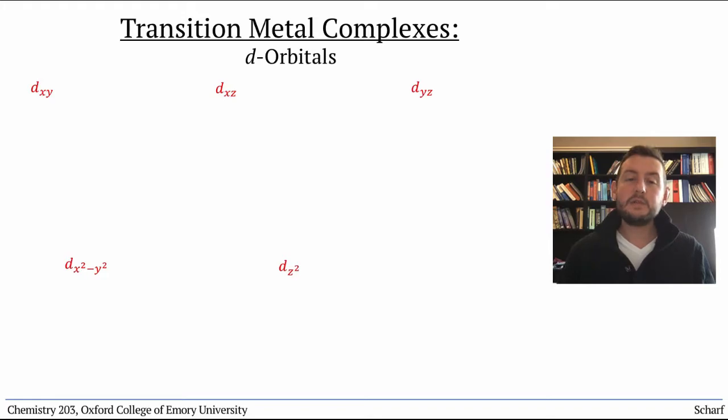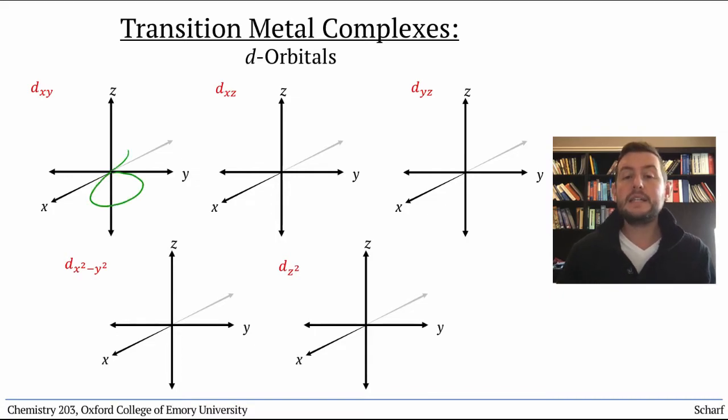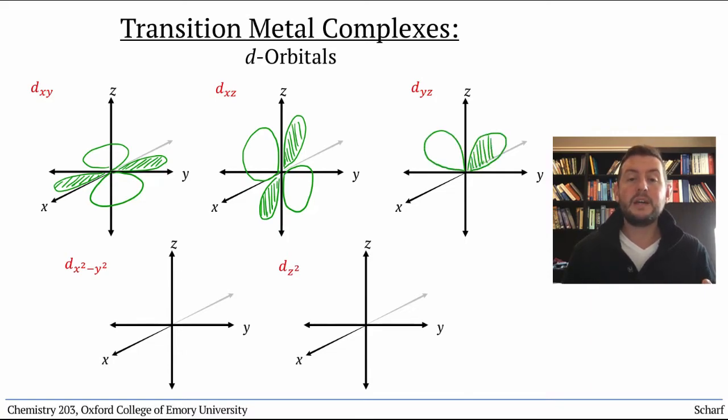If the transition metal ion's nucleus is at the origin of a three-dimensional Cartesian coordinate space, the dxz, dxy, and dyz orbitals all look like four-leaf clovers with the lobes of each orbital pointing between the axes that are part of their names. The dx² - y² orbital has a similar shape, like a four-leaf clover, but points directly along the x and y axes.